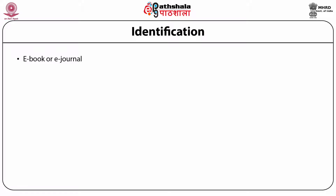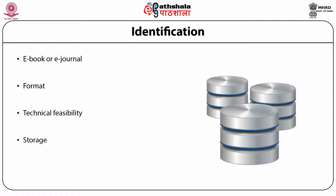The library must ensure that it has adequate technical infrastructure to support access or to host a resource being purchased or leased. Technical infrastructure may have to be evaluated in terms of computer platform and operating system, initial storage capacity and rate of growth, the software required to access or manage the resource, frequency of updates, network capabilities, storage and distribution media, and cost of maintenance.